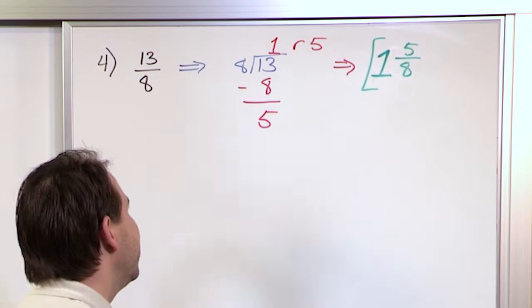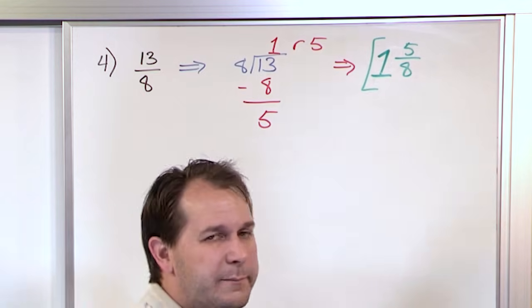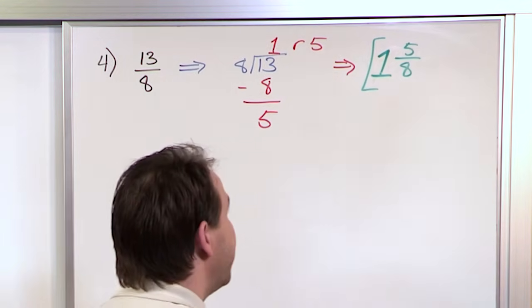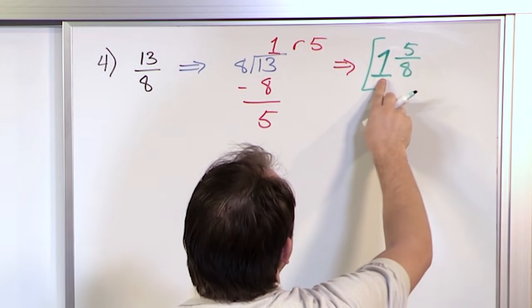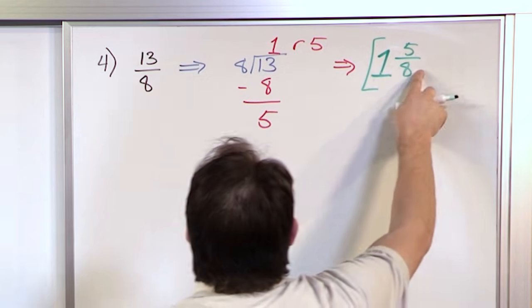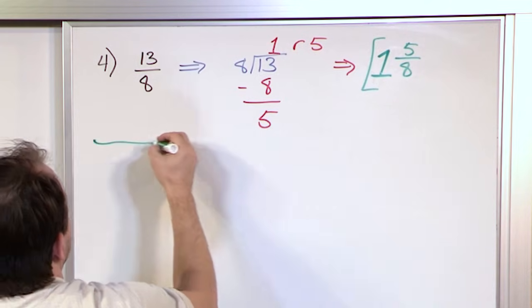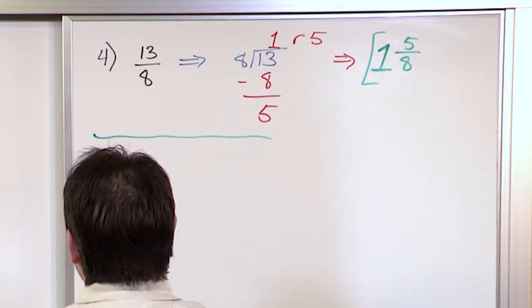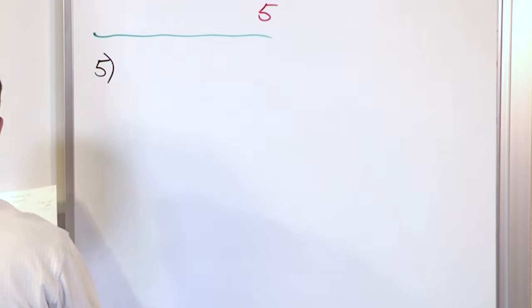When I do this division, it goes one whole time with a remainder of 5 out of my original denominator, which is 8—1 and 5 eighths. That is the answer. Once you get the hang of this method, it becomes clockwork. To check your work: 1 times 8 is 8, 8 plus 5 is 13 over 8, so it matches.